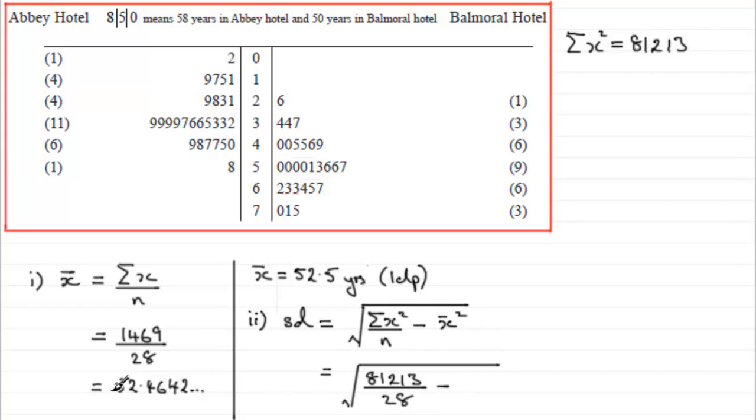Take away the mean squared. So we use that unrounded value, 52.4642 and so on, squared.